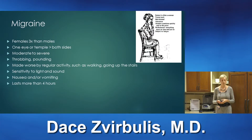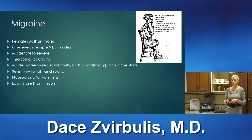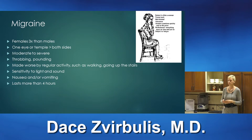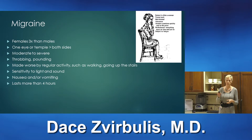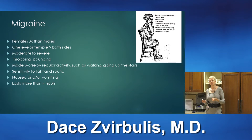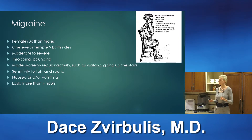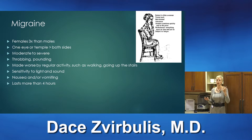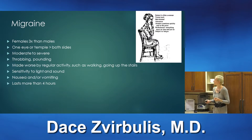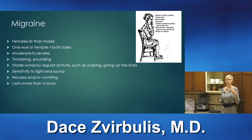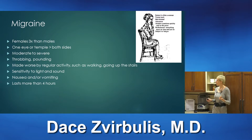Migraine headaches are the most common headaches seen in the office. They affect females more than men — one in four women has migraines. Pain can affect either one side or both and is usually moderate to severe, throbbing, pounding, and pulsating. It tends to get worse with regular activity. Patients are sensitive to light, sound, and sometimes smells. They can have nausea and vomiting, and these headaches last four hours or longer if untreated.